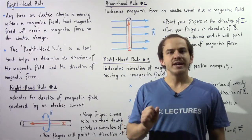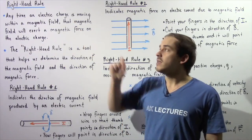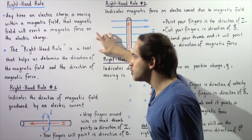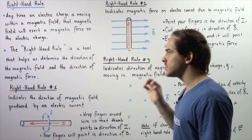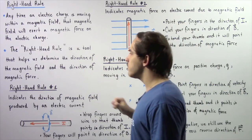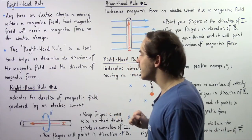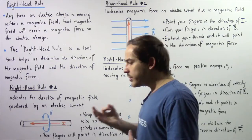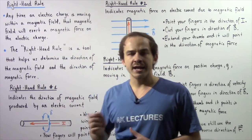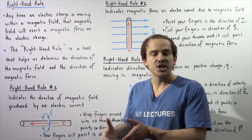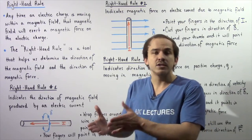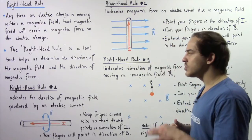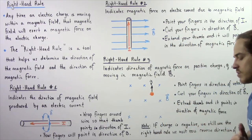To determine our direction, we essentially have to apply the right hand rule. The right hand rule is a tool that helps us determine the direction of the magnetic field as well as the direction of the magnetic force. There are three forms of the right hand rule, and each form tells us something about either the magnetic field or the magnetic force. Let's begin with right hand rule number one.